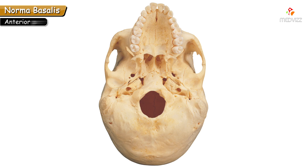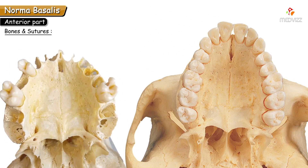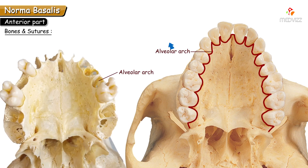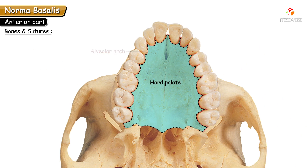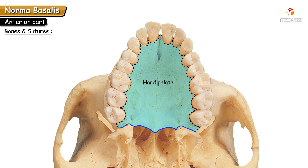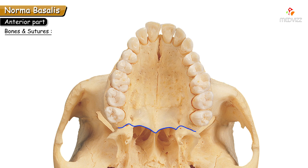The anterior part of Norma Basalis is formed by the alveolar arch, which possesses bony sockets for the teeth of the upper jaw. In the middle it is formed by the hard palate. The posterior border of the hard palate separates the anterior part from the middle part of Norma Basalis.